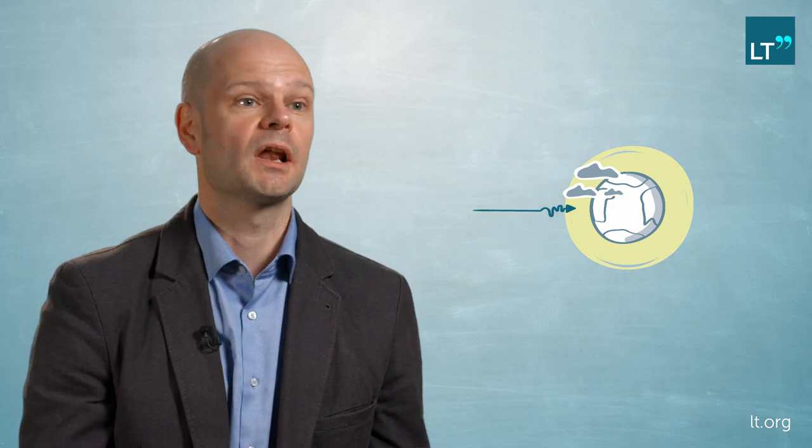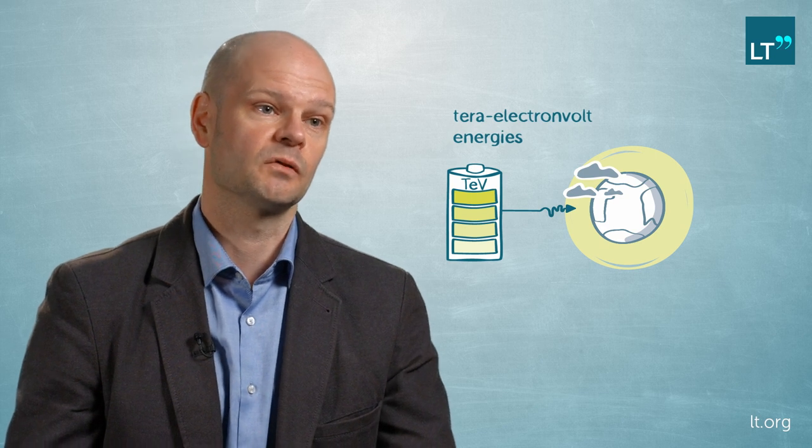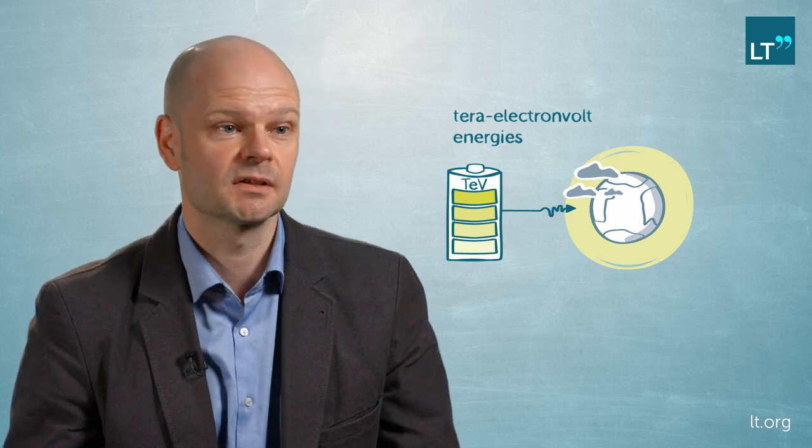But at these tera electron volt energies—photons that are a billion times more energetic than X-rays—the interaction of the gamma ray produces a cascade of particles in the Earth's atmosphere. Individual particles in this cascade can be travelling faster than the speed of light in air, which is a little bit slower than the speed of light in a vacuum. There is an effect called the Cherenkov effect, which produces a blue light in the optical band.